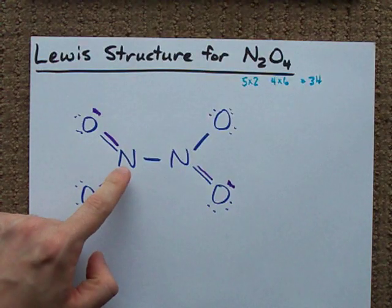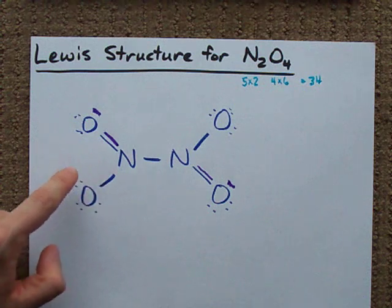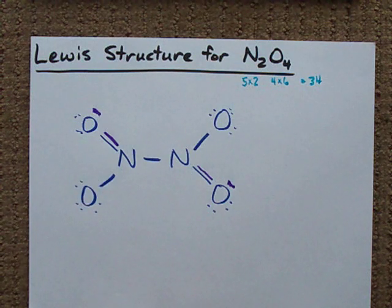So, my nitrogens have 8 electrons around them. My oxygens have 8 electrons around them. And it looks to me like we have 34 electrons total.